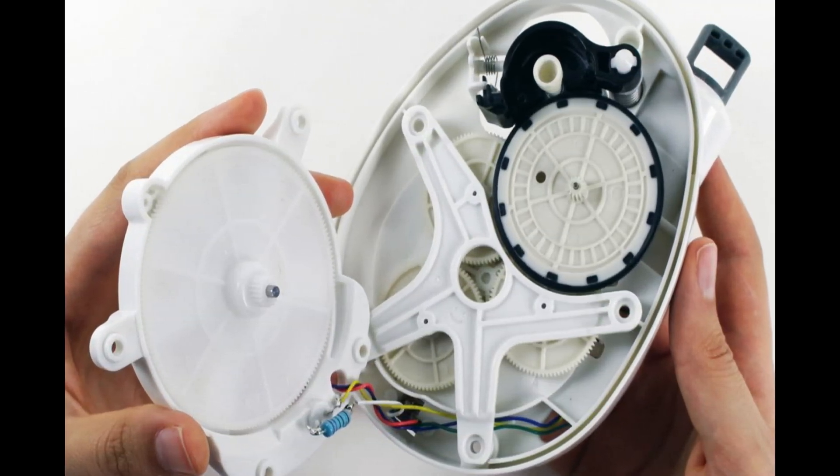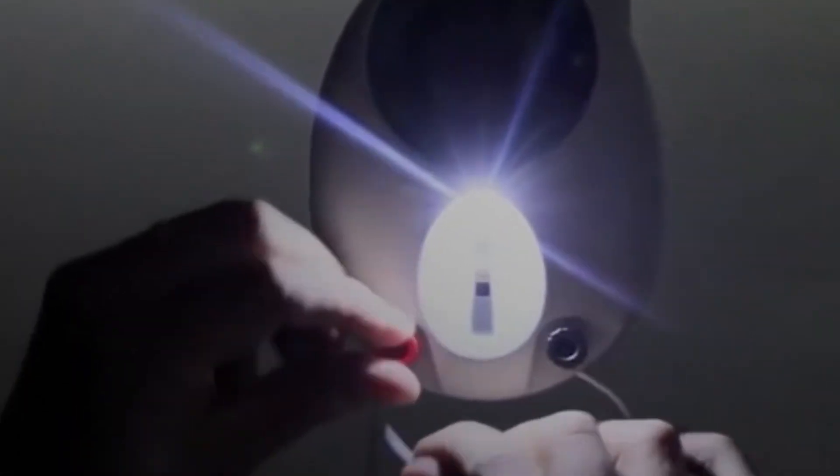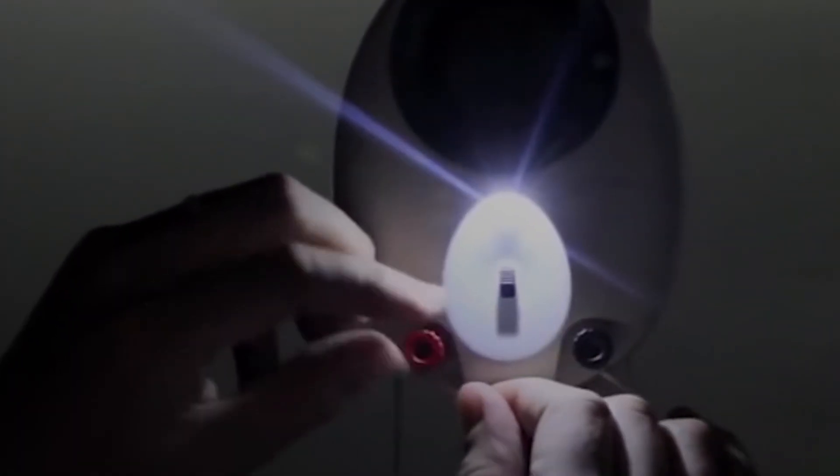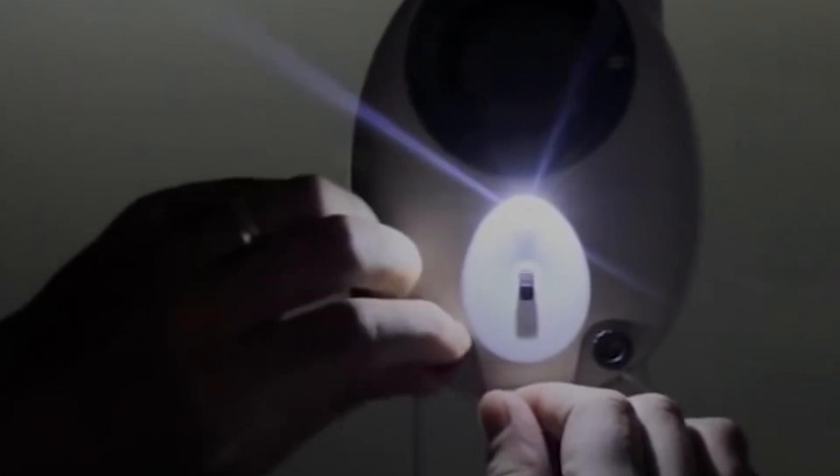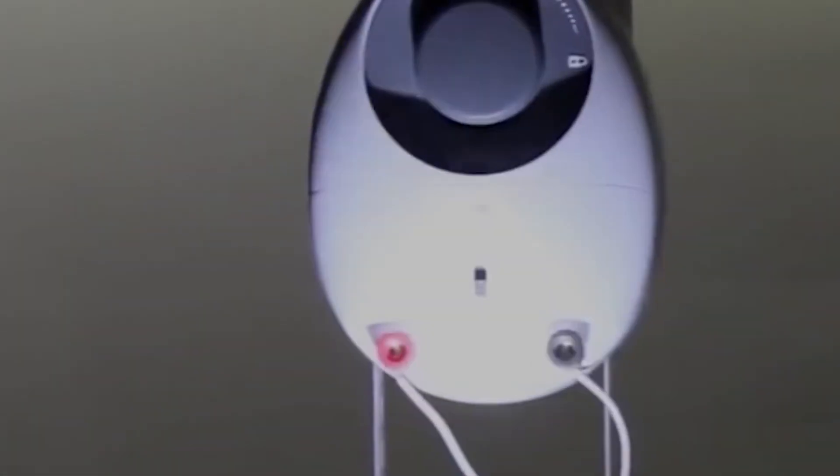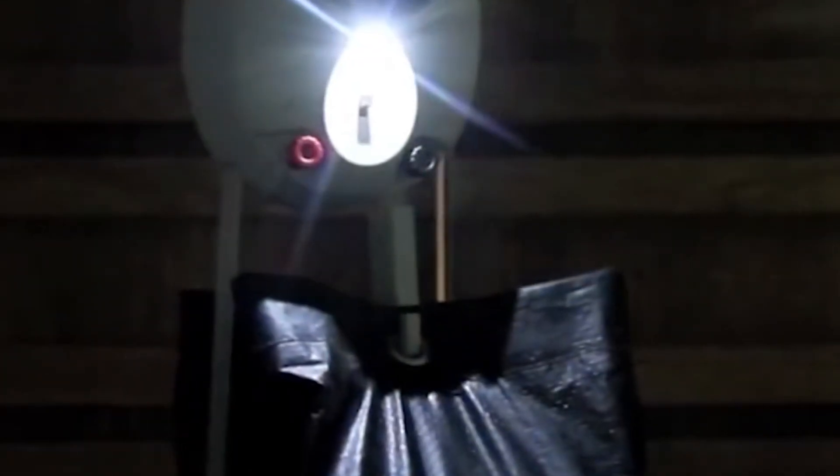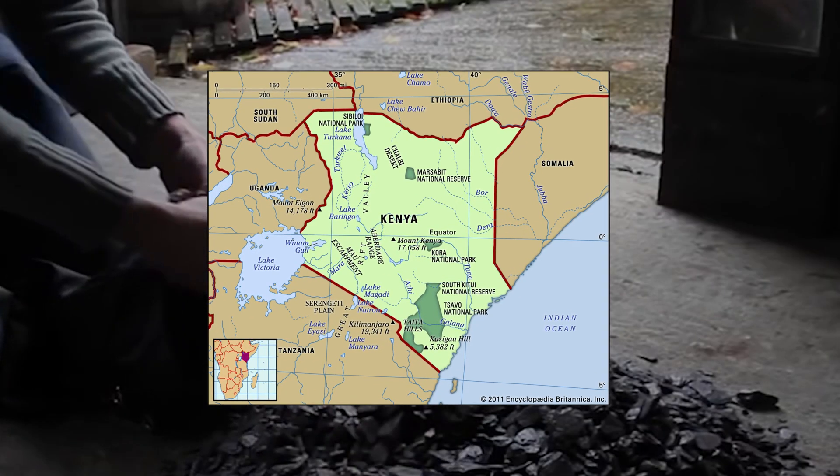Gravity Light is a UK company that uses a small weight to power a LED light for off-grid applications. The company claims that its system can provide up to 20 minutes of light with a single lift of the weight. In 2016, it launched its first product in Kenya and plans to expand to other countries in Africa and Asia.